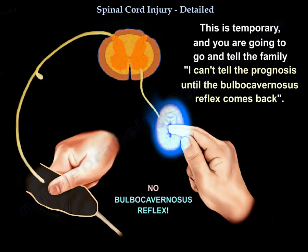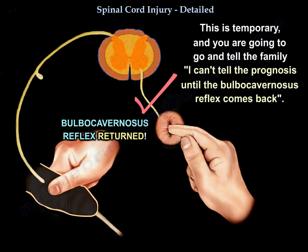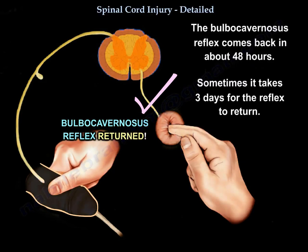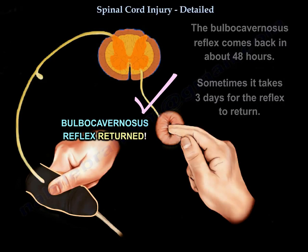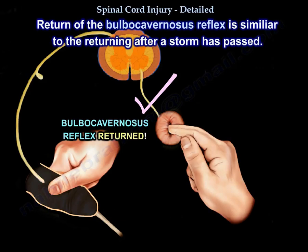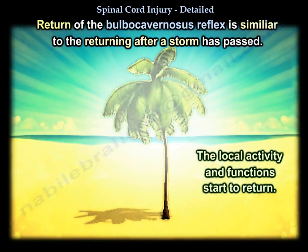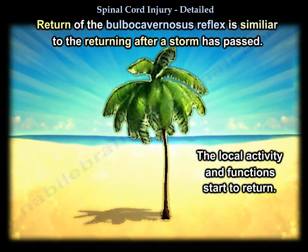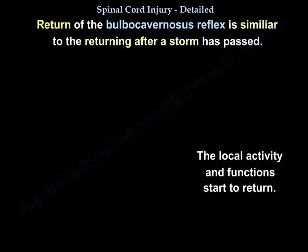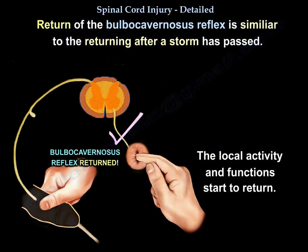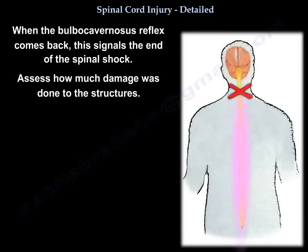Spinal shock is temporary. You tell the family: I can't determine the prognosis until the bulbocavernosus reflex comes back. It returns in about 48 hours, sometimes three days. It's like the local activity comes back after the hurricane - the local village farmers, their activity returns. That is the bulbocavernosus reflex. When it comes back, that means it is the end of the spinal shock.